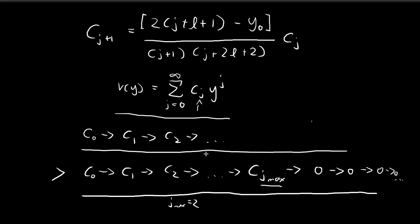So c₃, c₄, c₅, and all subsequent terms are equal to zero. This tells us something about the recursion formula: the only way for this behavior to happen is that once we reach j_max and substitute it into the recursion formula, we want the result to equal zero. That means c_{j_max} multiplied by some numerator equals zero.